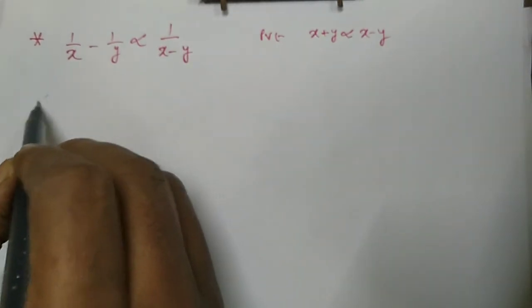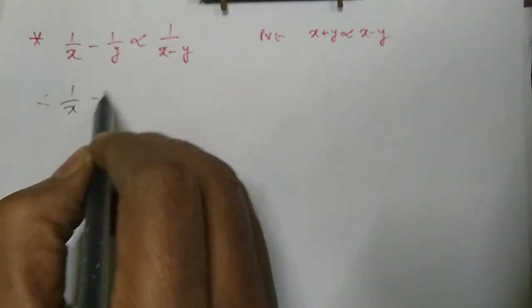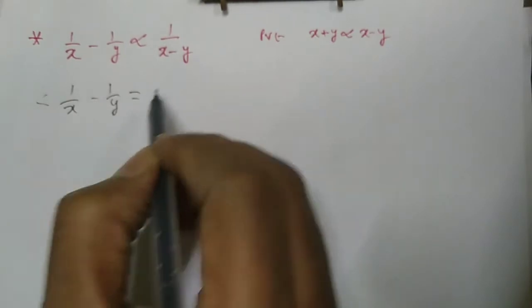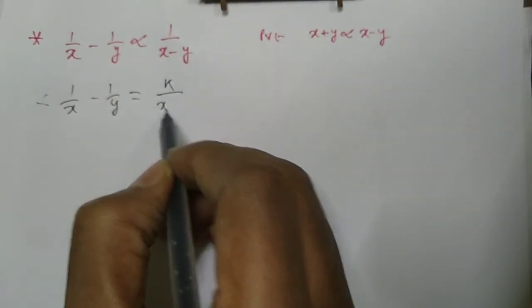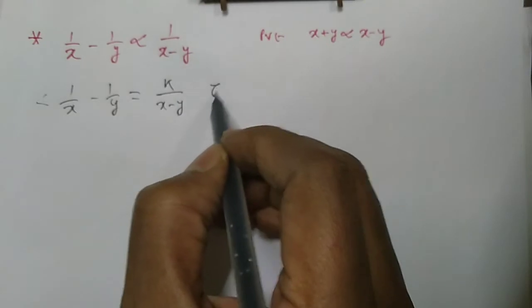Let us set 1/x minus 1/y equal to k divided by (x minus y), where k is the constant of variation.